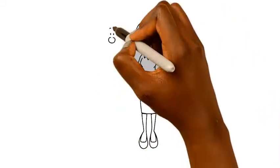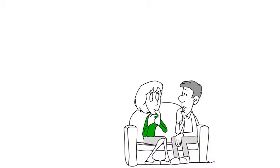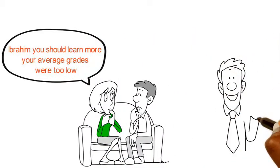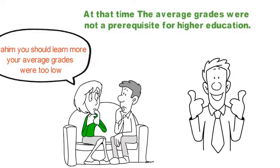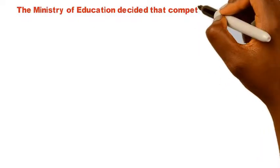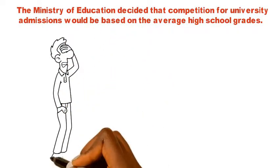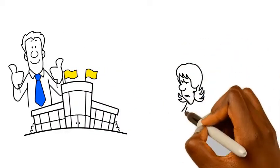Scenario 2. Ayelet and Ibrahim are close friends in King's and Queen's school. These friends shared their joys and sorrows together. One day, Ayelet advised her friend Ibrahim that he should learn more, as Ibrahim's average grades were too low. However, Ibrahim was happy that at that time, the average grades were not a prerequisite for higher education. At some point, the Ministry of Education decided that competition for university admissions would be based on the average high school grades. Ibrahim was concerned for a few days, but then he regained his composure. Ibrahim was later admitted into one of the universities in highest demand, while Ayelet was admitted into a university where admissions were open and less preferred.